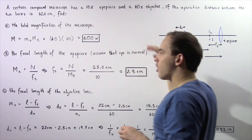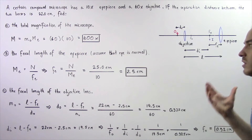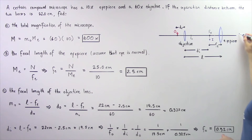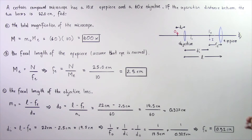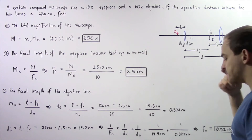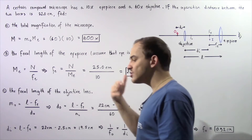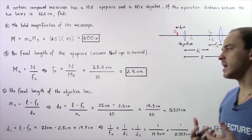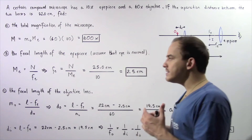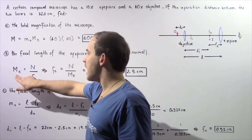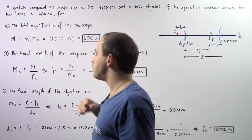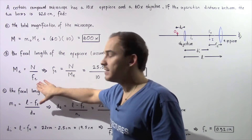Now let's move on to part B — finding the focal length of the eyepiece assuming we are dealing with a normal eye. A normal eye has a near point of 25 centimeters. From our previous discussion on compound microscopes, the magnification of the eyepiece equals the near point divided by the focal length of the eyepiece.